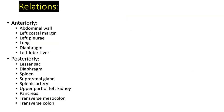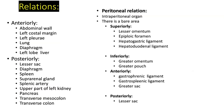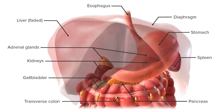The relations of the stomach: anteriorly, it is related to the abdominal wall, left costal margin, diaphragm, and left lobe of the liver. Posteriorly, it is related to the lesser sac, diaphragm, spleen, suprarenal gland, splenic artery, upper part of the kidney, pancreas, transverse colon, and transverse mesocolon. Regarding peritoneal relations, the stomach is an intraperitoneal organ with a bare area superiorly.